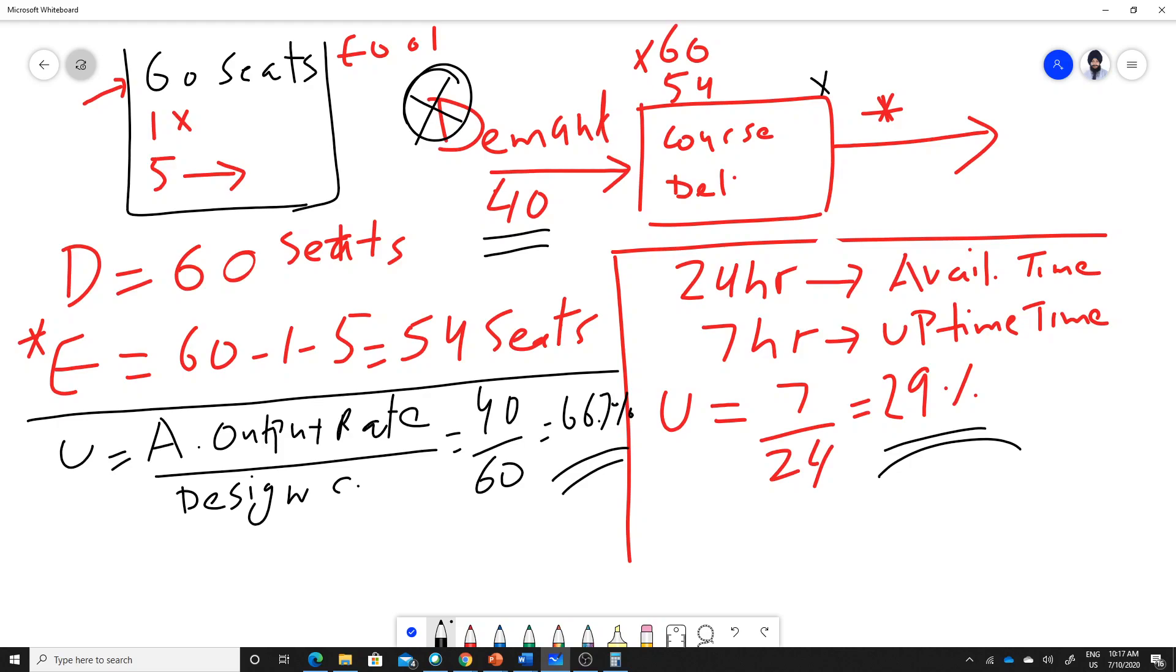We said for the service sector we use inputs to measure the capacity. The output is going to vary from course to course if I want to measure the capacity and efficiency of this room. The output will vary depending upon how many students are attending the course based on the enrollment.